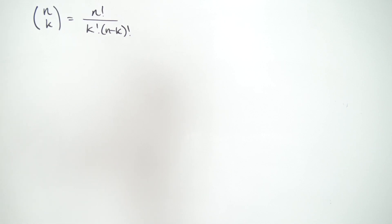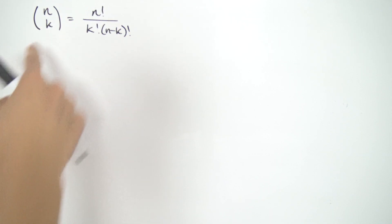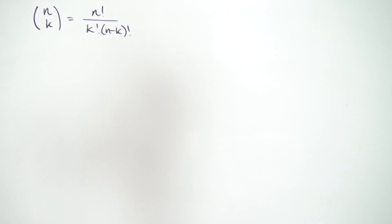Greetings everybody. Today we're going to be deriving some contour integral representations for the binomial coefficients — the entries n choose k. This is something pretty cool you can do; you can use it to derive nice identities involving these coefficients and calculate infinite sums using the residue theorem. I'll probably get to that in the next video as a little example.